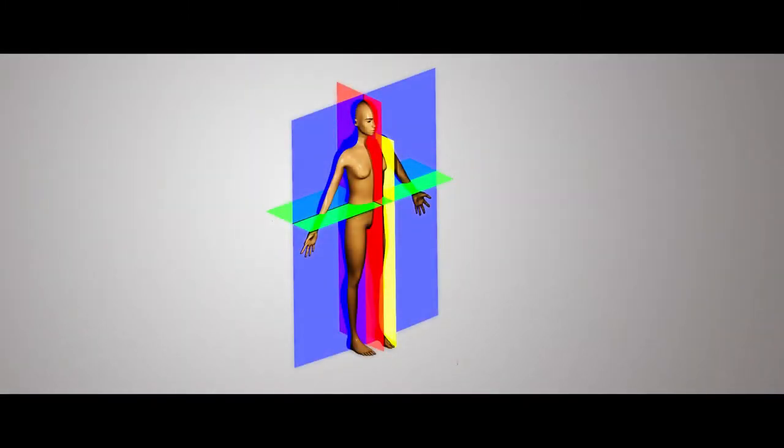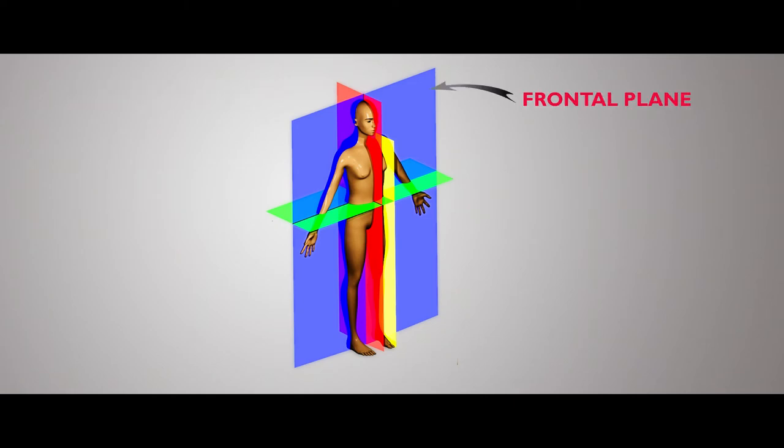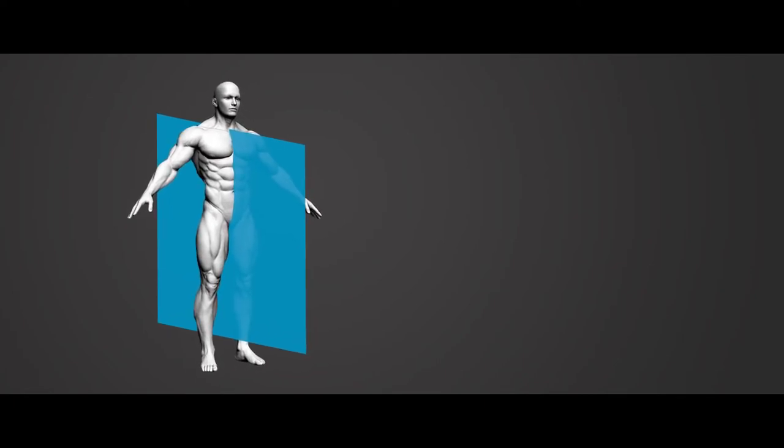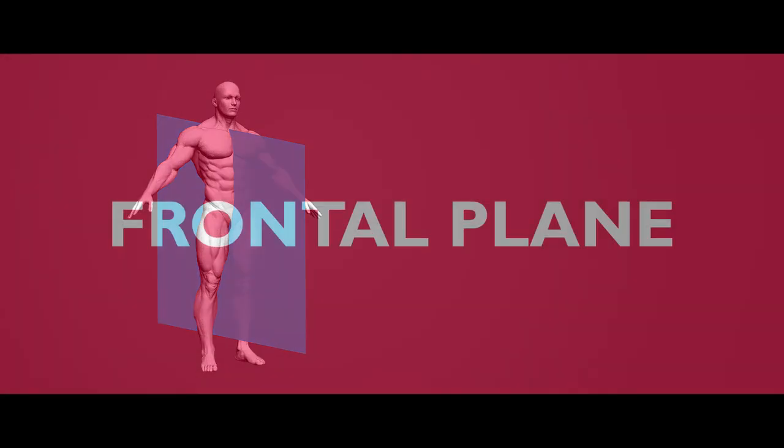Mainly there are three planes of motion in anatomy: they are the sagittal plane, frontal plane, and transverse plane. The imaginary plane that divides the body or any of its parts into right and left sections is called a sagittal plane.